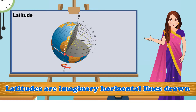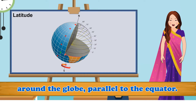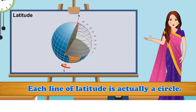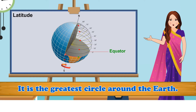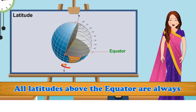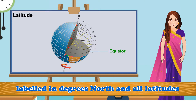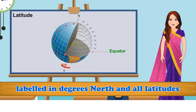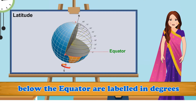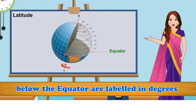Latitude: Latitudes are imaginary horizontal lines drawn around the globe, parallel to the equator. Each line of latitude is actually a circle. Latitudes are measured in degrees. The equator is a latitude which is at zero degrees; it is the greatest circle around the Earth. All latitudes above the equator are labelled in degrees north, and all latitudes below the equator are labelled in degrees south — for example, 30 degrees north latitude or 30 degrees south latitude, respectively. The north and south poles are points, not circles.